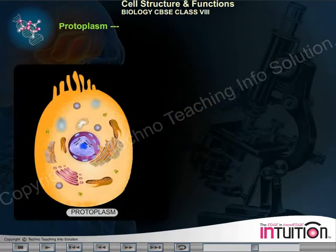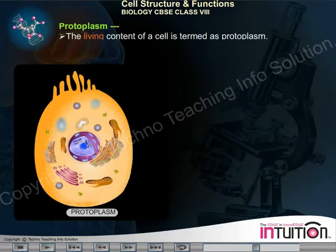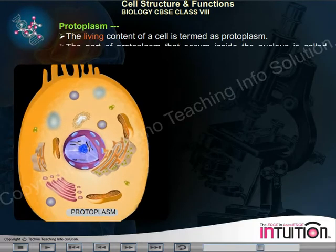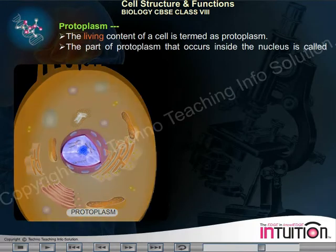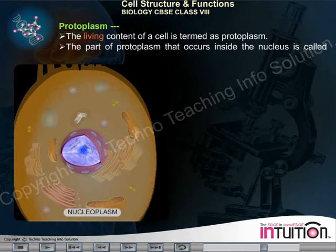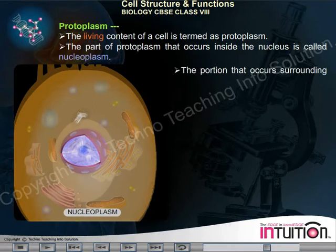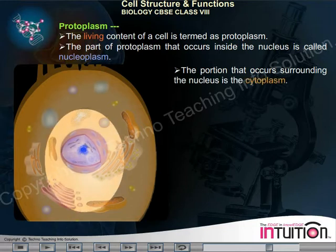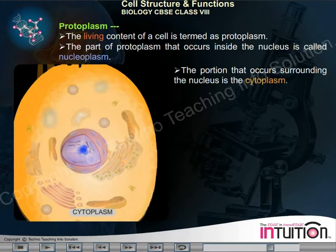Protoplasm. The living content of a cell is termed as protoplasm. The part of protoplasm that occurs inside the nucleus is called nucleoplasm; the portion that occurs surrounding the nucleus is the cytoplasm.